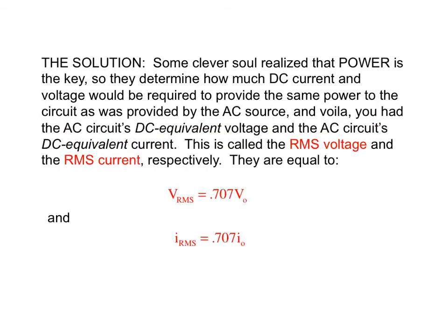Thus came about the idea of the DC equivalent voltage and the DC equivalent current associated with an AC circuit. These values are called the RMS voltage and the RMS current, and they're defined as 0.707 of the amplitude of whichever function you happen to be dealing with. I will actually derive this function using a power relationship in class.